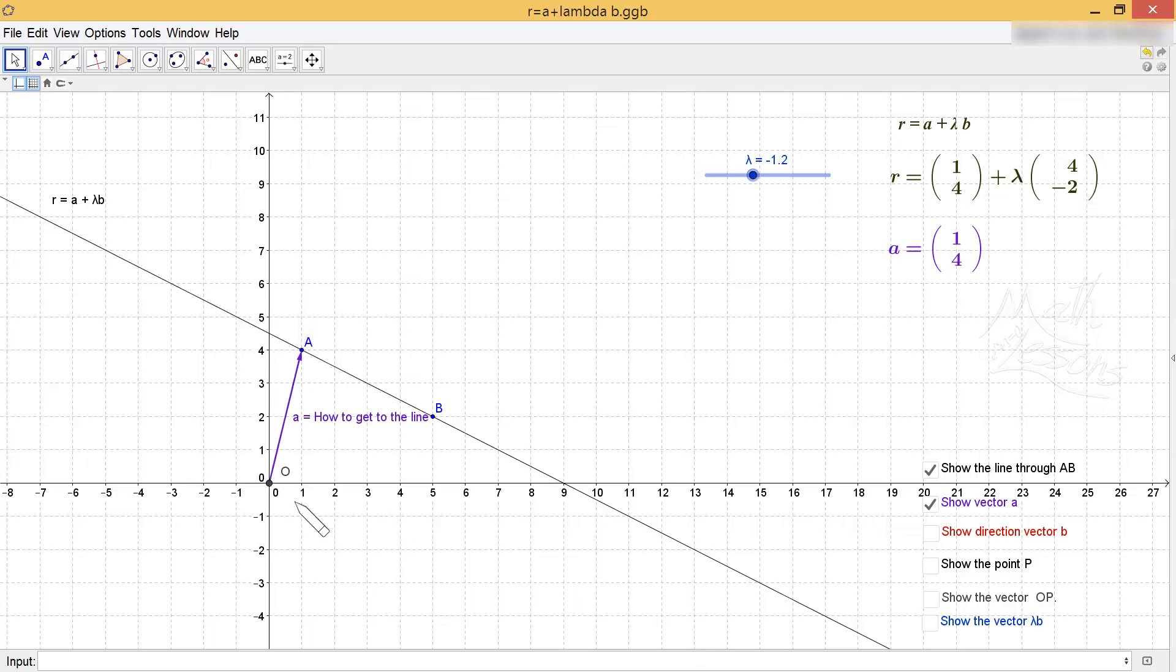So here's that vector going from the origin to the line. Then if I want to be able to move along the line, I need a direction vector, and the direction vector I'm going to use is AB. So I'm going to use AB to move along the line, and let's just show you a point on the line. Here's a point P.